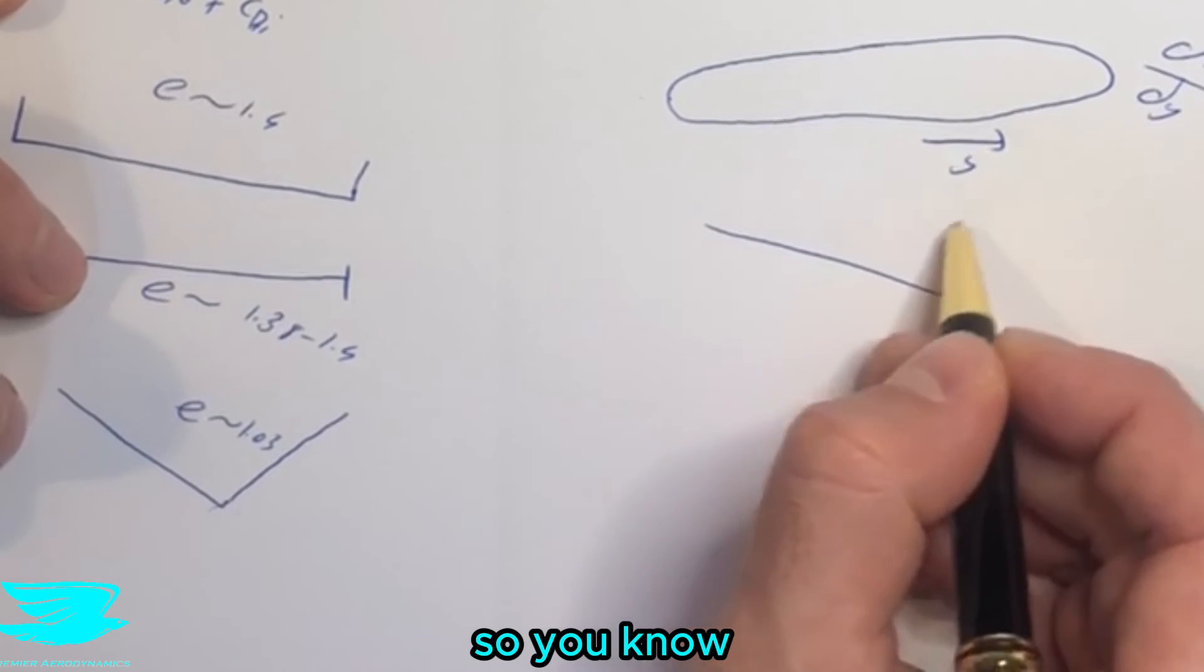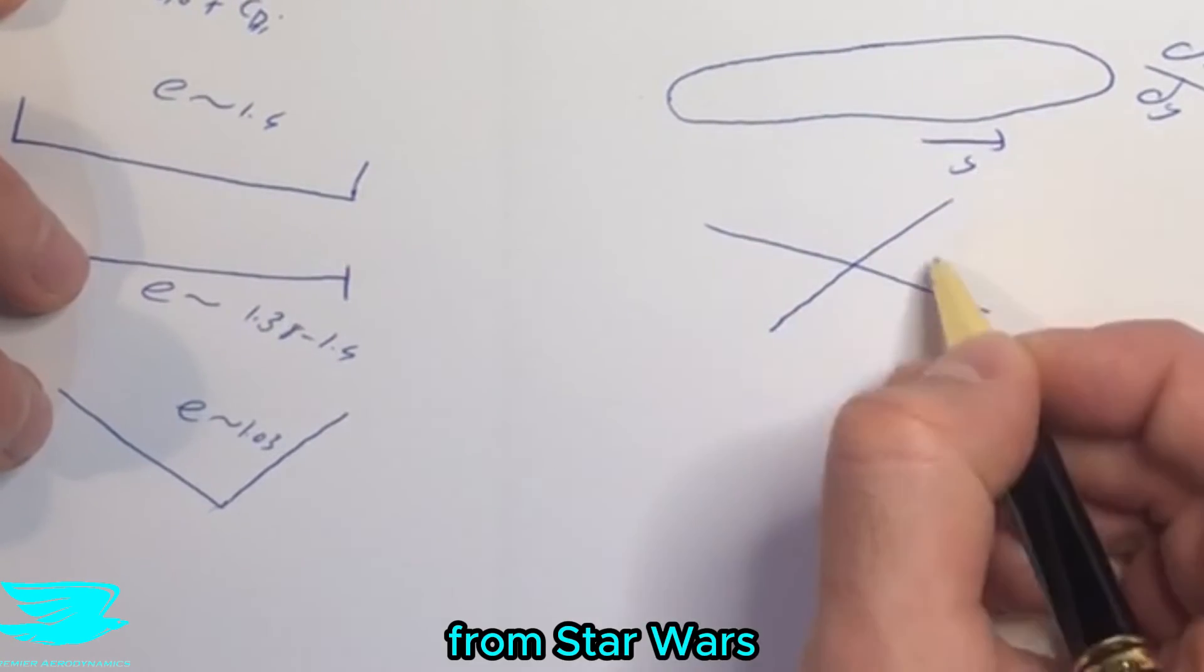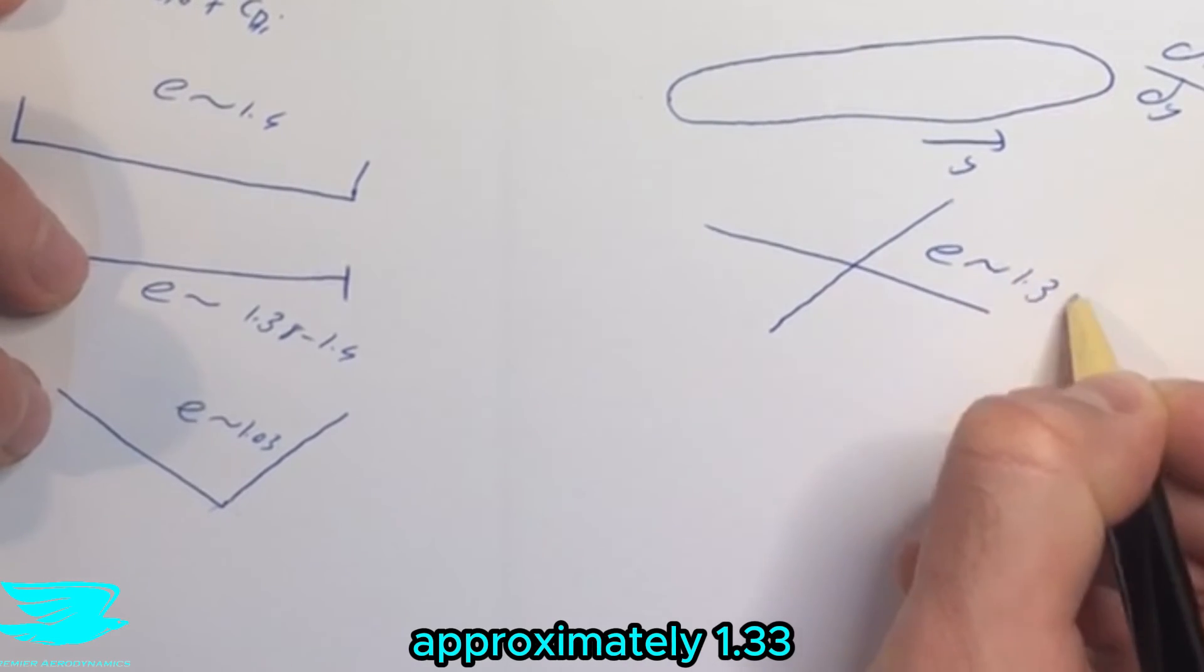What about if we have a cross wing? So, you know, like a TIE fighter or something, which is pretty cool from Star Wars. We have E is approximately 1.33.